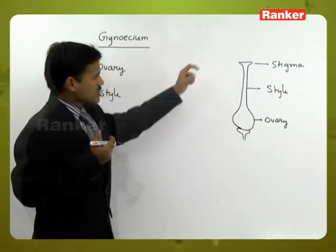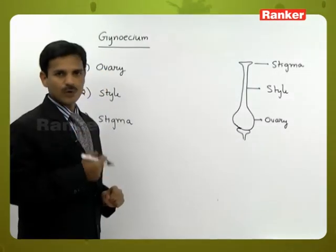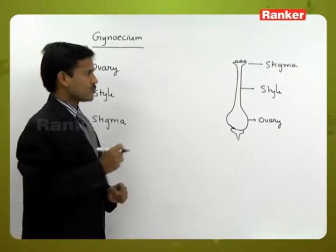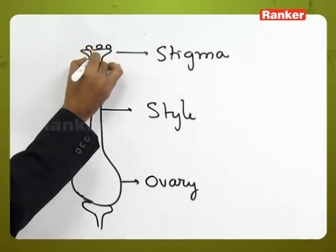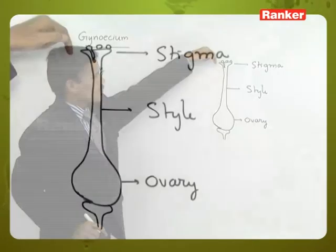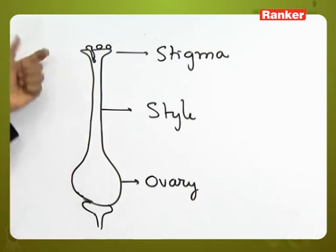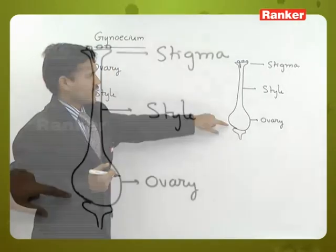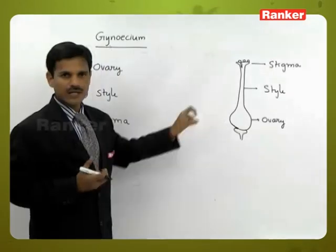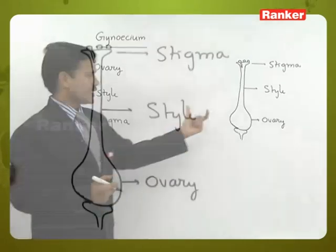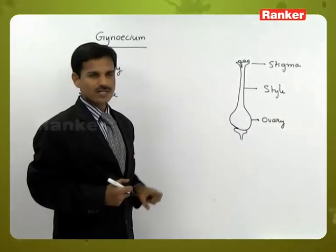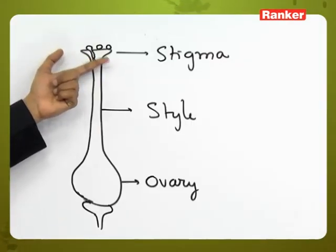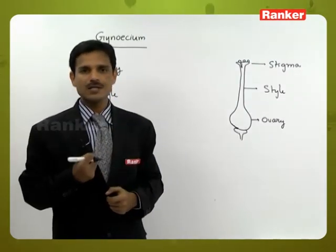Stigma is the upper part of the Gynoecium and it receives the pollen grains. After pollination, pollen grains are present on the stigma and they develop into pollen tubes. Each pollen grain develops a pollen tube that penetrates through the style and reaches the ovary. So stigma is the receptive part and helps in the germination of pollen grains.